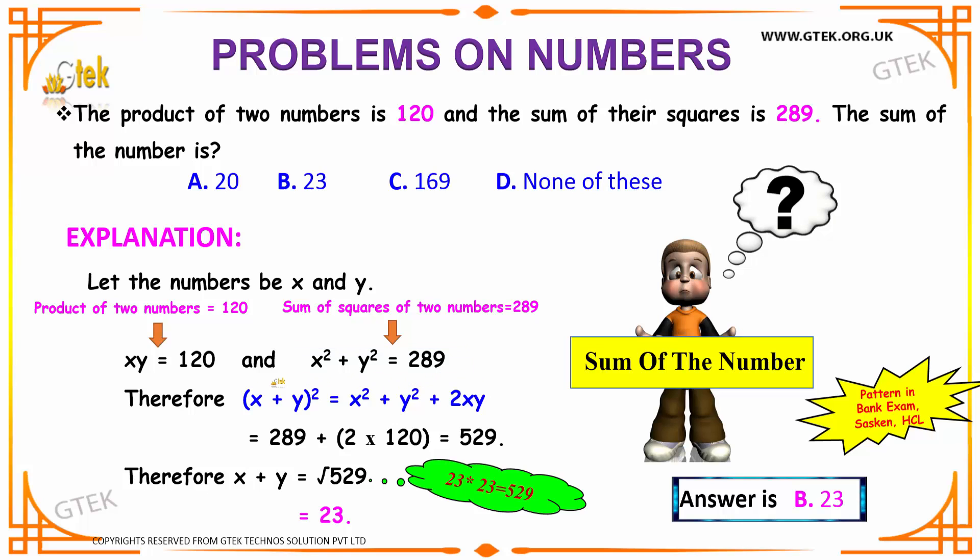As we know, the formula for X plus Y the whole square is equal to X square plus Y square plus 2XY. Substitute your value over here, 289 plus 2 into 120, that gives you 529. Therefore,